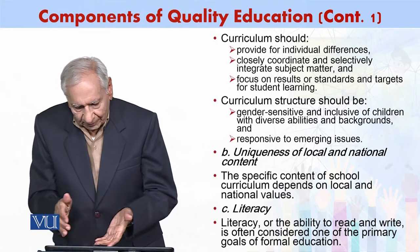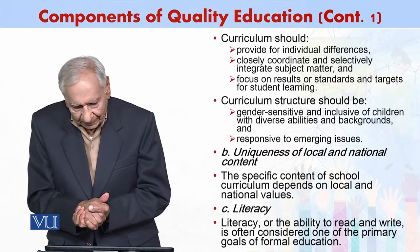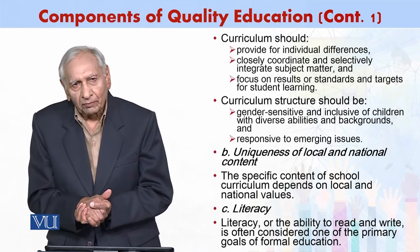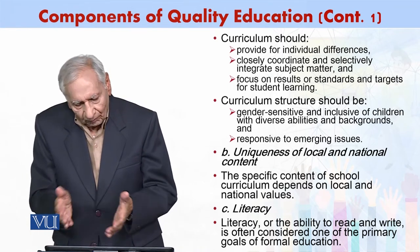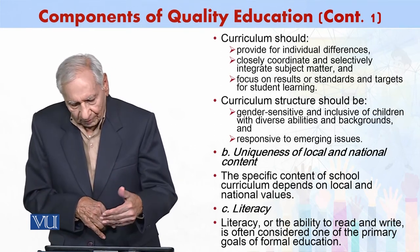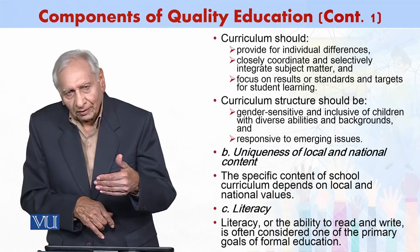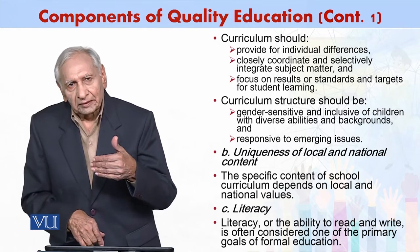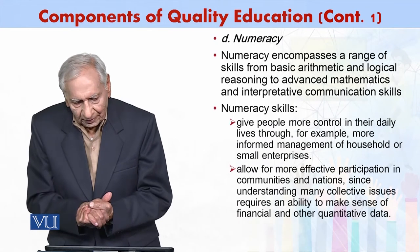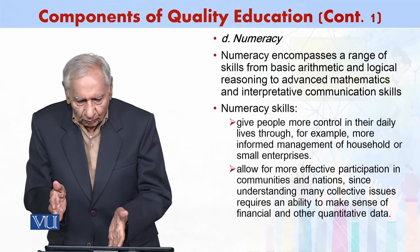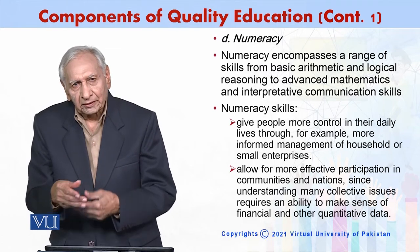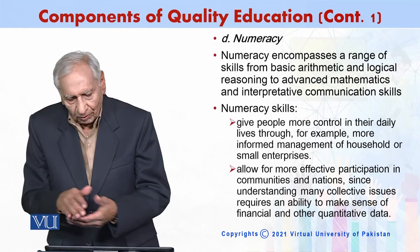Next is literacy. Literacy, or the ability to read and write, is often considered one of the primary goals of formal education. Literacy includes reading and writing. The third element is arithmetic — numeracy is also part of it, so counting, addition, and subtraction should also be there.